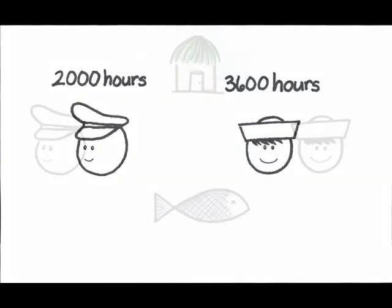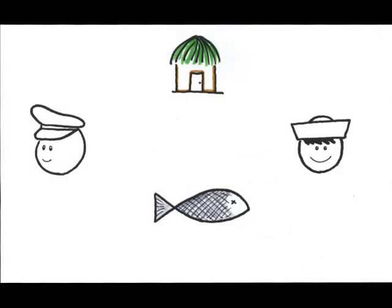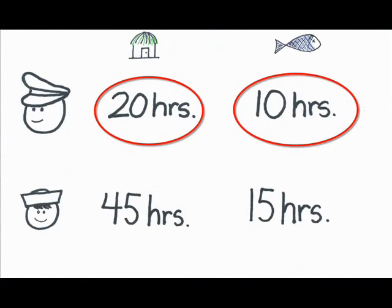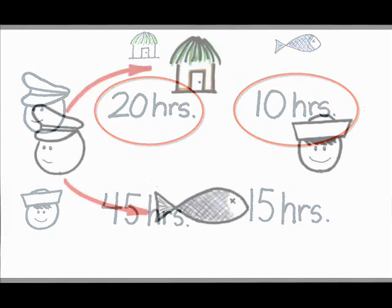Okay, in terms of who should be producing which product, what would Adam Smith say? Remember, Smith thought that specialization should be dictated by who has absolute advantage—that is, who can produce at the lowest resource cost. In this case, Skipper actually produces both items using less labor hours, so he has absolute advantage in both products. Smith would say that Skipper should produce both products.